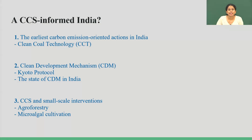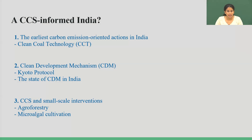The next section explores CCS in our country. The earliest carbon emission-oriented actions in India most notably include clean coal technology. Over more than a decade, the clean development mechanism has been operative in this country. The clean development mechanism originates in the Kyoto Protocol, according to which developed and developing countries were divided as Annex 1 and Annex 2 countries. Annex 1 countries invest in developing countries in the matter of climate change, offering resources, monetary compensation, and technology so that Annex 2 countries are able to offset climate change and obtain greater security in the climate change conversation.